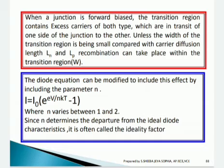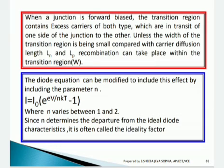When a junction is forward biased, the transition region contains excess carriers of both types in transit from one side to the other. Unless the width of the transition region is small compared to the carrier diffusion lengths Ln and Lp, recombination can take place within the transition region. The diode equation is then modified to include the parameter n: I = I₀ · (e^(eV/nkT) − 1), where n varies between 1 and 2.